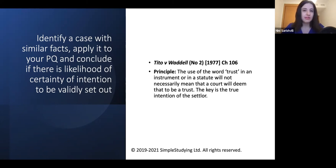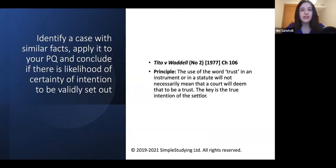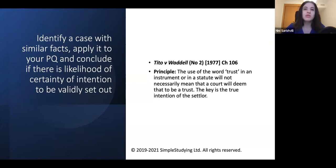Even if you have various cases that may suggest different outcomes — for example, one case according to which it can be argued there is certainty of intention, and another according to which there is no certainty of intention — you should cite both cases. Apply both and say which one you think is more applicable, and state that if the court takes that view, this case should be applied, and therefore there is or is not certainty of intention.